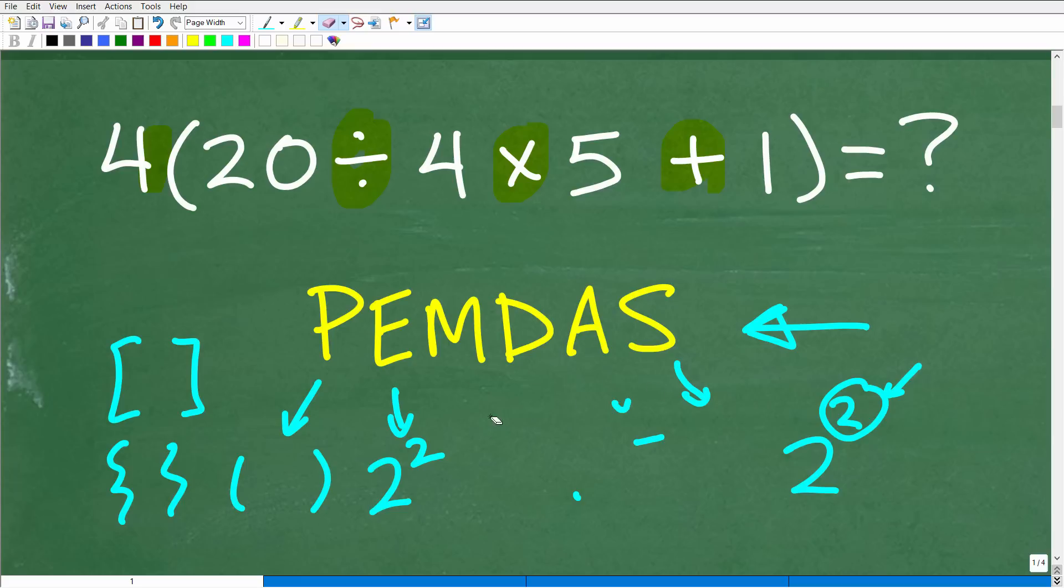But most students, they know this phrase, PEMDAS, they go, oh, I have to always do multiplication. And then once I do all the multiplication, then I do division, et cetera. That's not how this works. What you want to do is think of this as a group. So M and D.